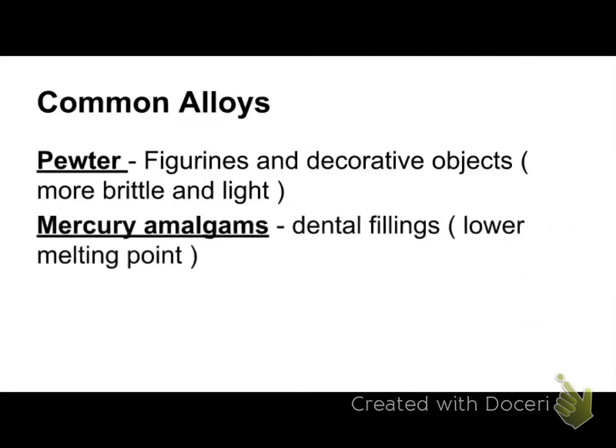Mercury amalgams — older dental fillings contain mercury. You don't want to be around or touch mercury. What they do is mix mercury, which has a very low melting point — it's a liquid at room temperature — with another metal. It's very moldable and easy to melt. Older fillings have a silver look because of mercury amalgams.